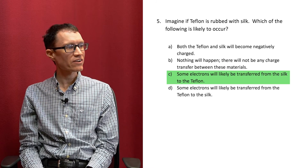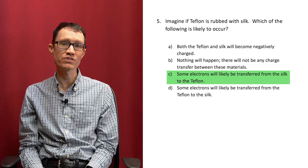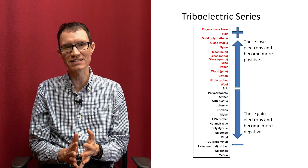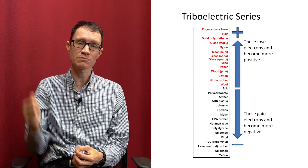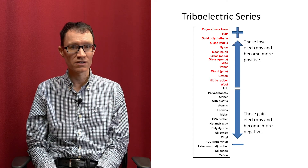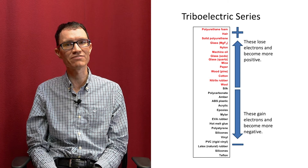The correct answer is C — some electrons will likely be transferred from the silk to the Teflon. If we look at the triboelectric series, we can see that both Teflon and silk appear on the negative side of the series. But that doesn't mean that when you rub Teflon against silk both substances will magically become negative. Because Teflon appears at the bottom end of the triboelectric series, it can grab electrons a little bit more easily than the silk can. Some of those electrons might come from the silk to the Teflon. The silk would tend to become positive and the Teflon negative with this particular example.